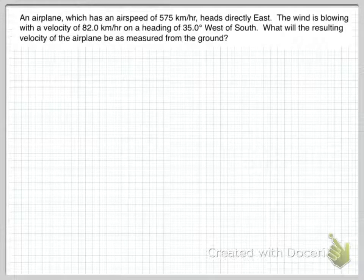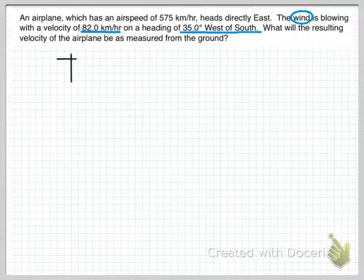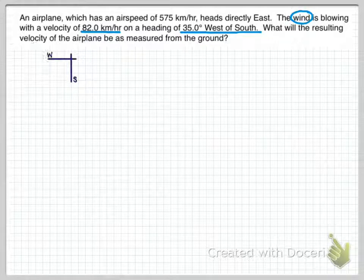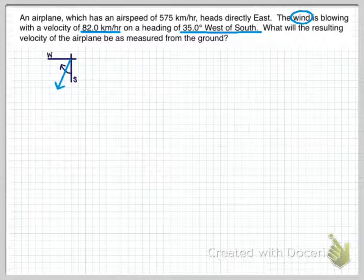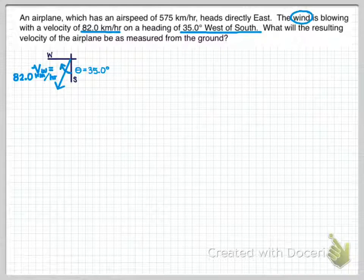First thing, let's take the wind and break it down a little bit. The wind is blowing 82 kilometers an hour, 35 degrees west of south. That's a little tricky for some people — you're going south, heading west of south. So measuring from south toward west, that angle is 35 degrees. This vector is the velocity of the wind at 82 kilometers an hour.